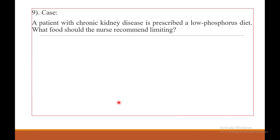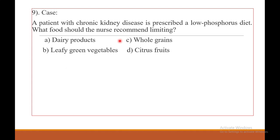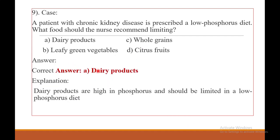Question number nine. A patient with chronic kidney disease is given a dietary recommendation by the nurse. The choices are: A — dairy products. B — leafy green vegetables. C — whole grains. The answer is A — dairy products. Dairy products are high in phosphorus and should be limited in patients with chronic kidney disease.